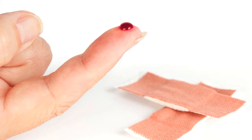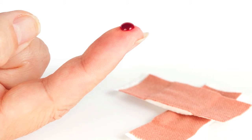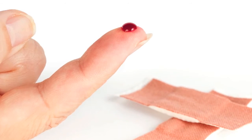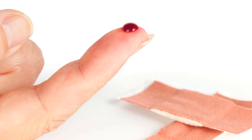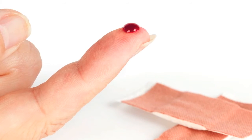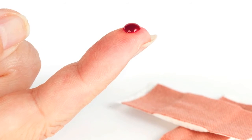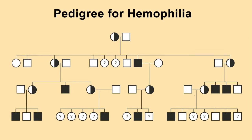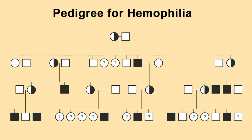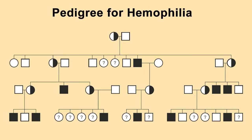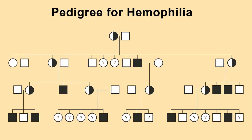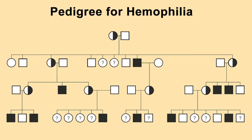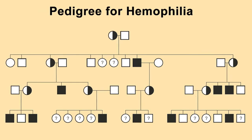Hemophilia is a serious disease where affected individuals lack the proper clotting proteins in their blood, so even small cuts and bruises can be dangerous because the bleeding can be very slow to stop. When looking at this example hemophilia pedigree, it can seem quite confusing — it has multiple generations of different types of symbols. So perhaps we should first take a simpler approach.